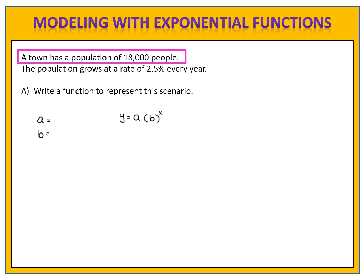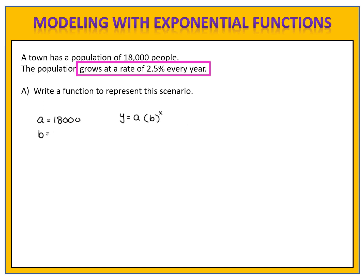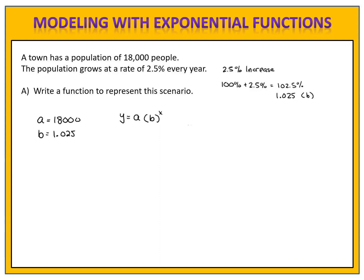The a value is what you start with. Our starting population was 18,000 people, so a equals 18,000. Next we need the value for b, which is the factor or multiplier. That comes from the rate of growth of 2.5% per year. We have 100% of our population plus 2.5% more, which means we will have 102.5%. We convert that percentage to a decimal — 1.025 — by moving the decimal point two places to the left, and we now have our value for b. The factor or multiplier is 1.025.